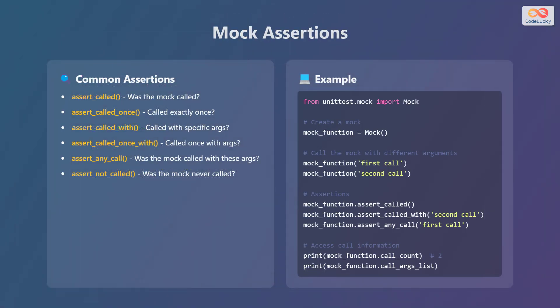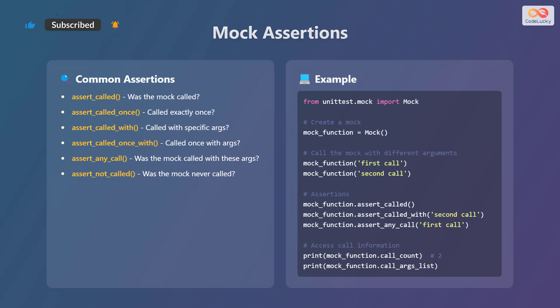Let's explore mock assertions. Here are some common assertions: assert_called checks if the mock was called; assert_called_once checks if the mock was called exactly once; assert_called_with checks if the mock was called with specific arguments; assert_called_once_with checks if the mock was called once with specific arguments; assert_any_call checks if the mock was called with these arguments; and assert_not_called checks if the mock was never called. To use these assertions, first create a mock function, call the mock with different arguments, then use the assertions to check the call behavior. You can also access call information such as call count and call arguments list.